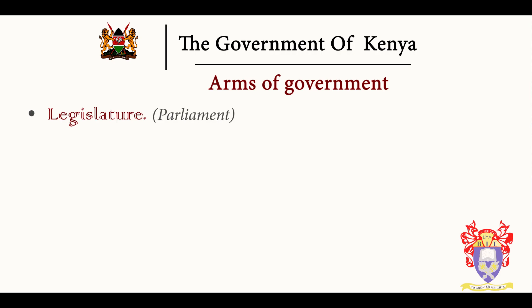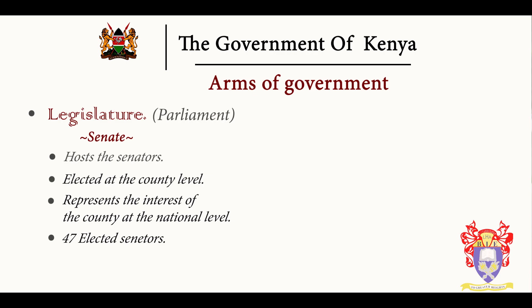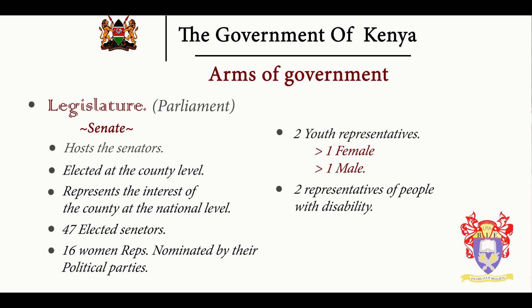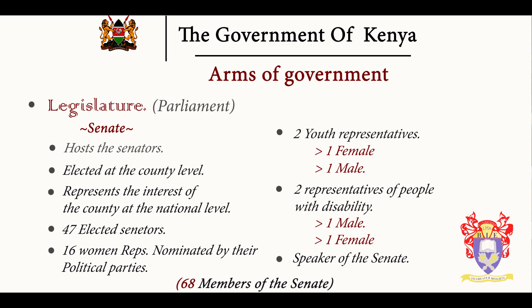Then we have the Senate. The Senate has senators, and with Kenya having 47 counties, there are 47 senators who are elected by the wananchi at the county level. Apart from that, we have 16 women representatives nominated by their political parties, two youth representatives — one female and one male — and two representatives for people with disabilities, one male and one female. Then we also have the Speaker of the Senate. The total number is 68 members.